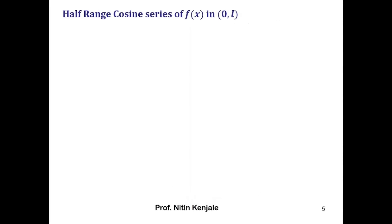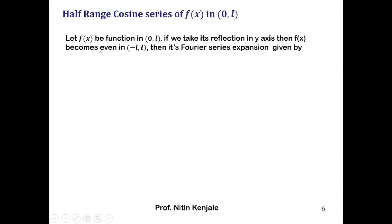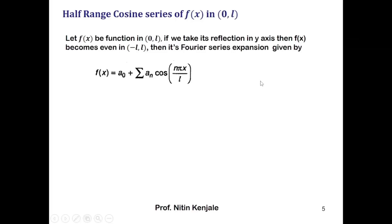Now we see what is the half range cosine series of f(x) in the interval 0 to l. Let f(x) be any function in the interval 0 to l — no matter what is the nature of f(x), either even or odd. If we take its reflection in the y-axis, then it will always be an even function in the interval minus l to l. So its Fourier series expansion is given by a naught plus summation a_n cos(nπx/l), where b_n takes value 0.